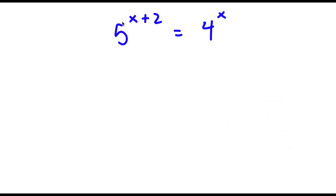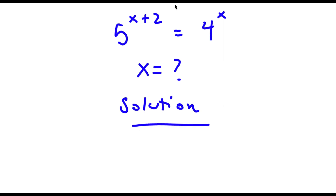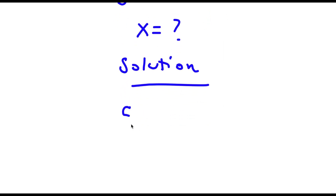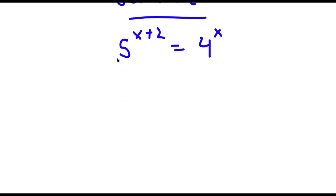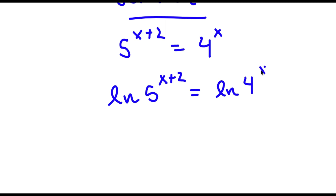Alright, so I have 5 to the power of x plus 2 is equal to 4 to the power of x. I obviously want to find the value of x. So first start with 5 to the power of x plus 2 is equal to 4 to the power of x. Now I'm going to take the natural log, or ln, on both sides. So now I have ln of 5 to the power of x plus 2 is equal to ln of 4 to the power of x.